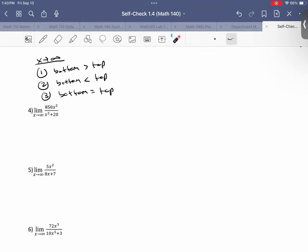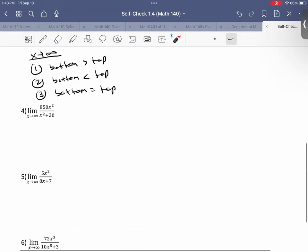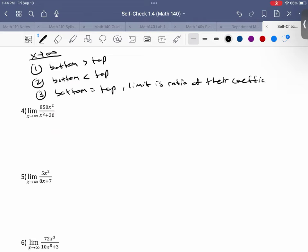So let's check out this one. Limit as x goes to infinity, 850 x squared over x squared plus 20. So this is a situation where the powers are the same, x squared and x squared. So powers are the same. So when it's the same, the limit is ratio of their coefficients. So this limit is going to equal the ratio of the coefficients of x squared and x squared. So think of this having an invisible one right there. So really, the limit of this guy is just going to be 850 over 1, which is just 850. And that's the answer.